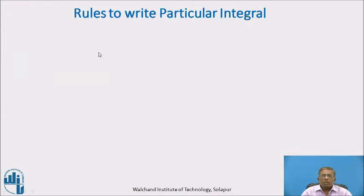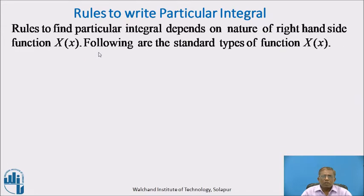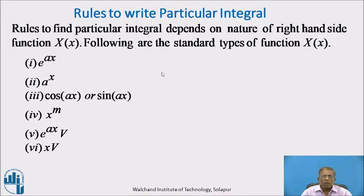Now, rules to find particular integral. The rules depend on the nature of the right-hand side function X(x). The standard types of functions X(x) are: e^(ax), a^x, cos(ax) or sin(ax), x^m, e^(ax)·V, and x·V. But in this session, we discuss how to find particular integral when the function is e^(ax).